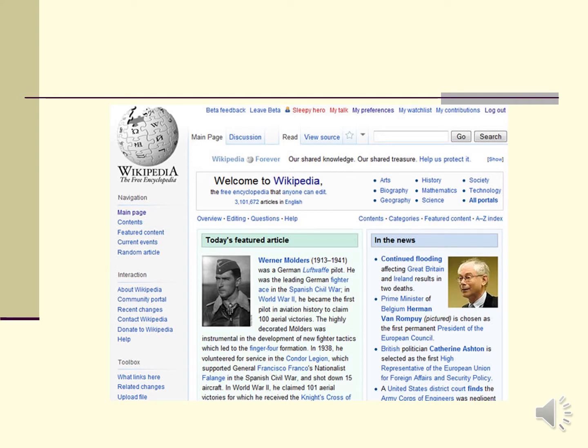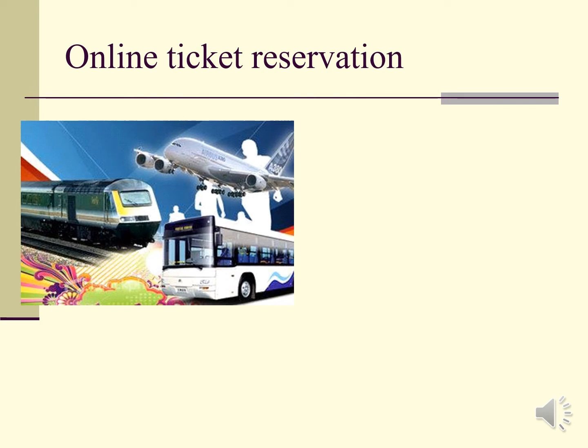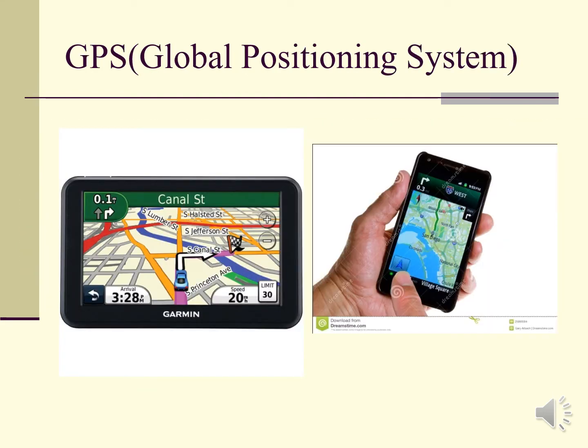Knowing about any new technology has become very easy with the help of ICT. I hope you all know about Wikipedia — it is the largest online encyclopedia. By using this website we can gain knowledge of any field. I hope all of you know about e-shopping. By using electronic shopping we can purchase anything from our home by just clicking on our computer. Nowadays we can also purchase or reserve our train and bus tickets online.